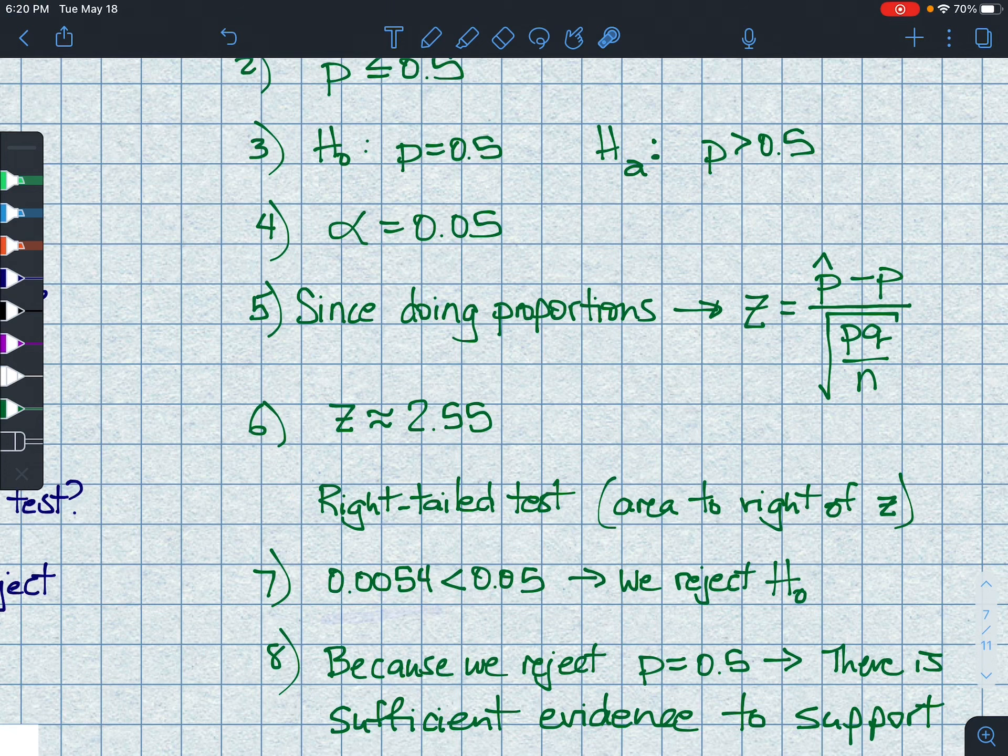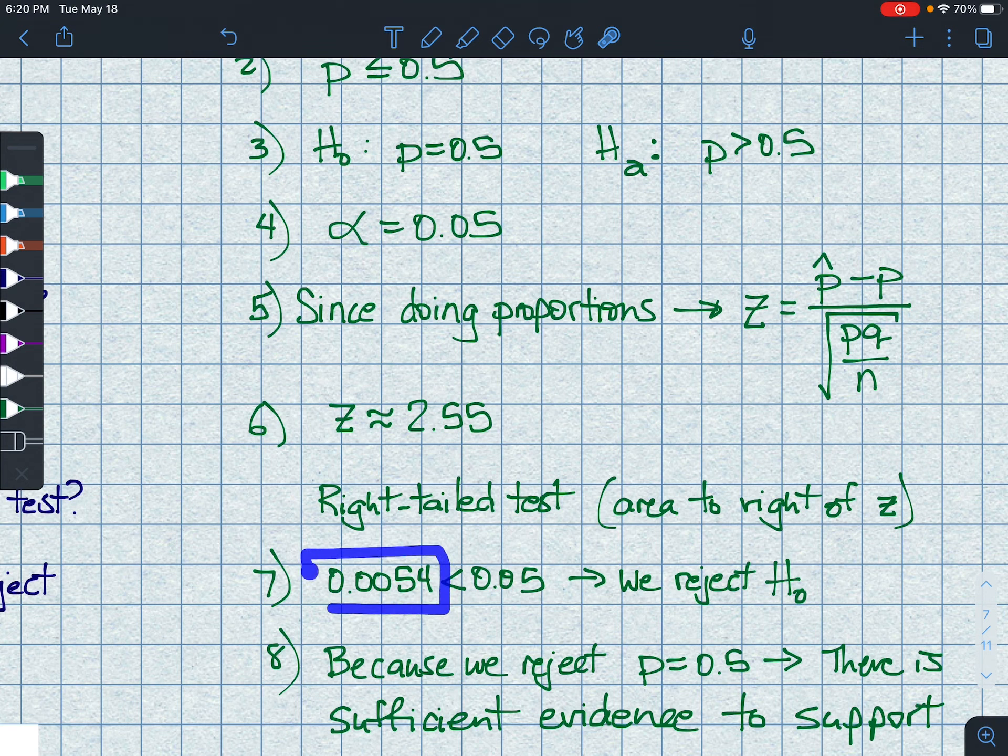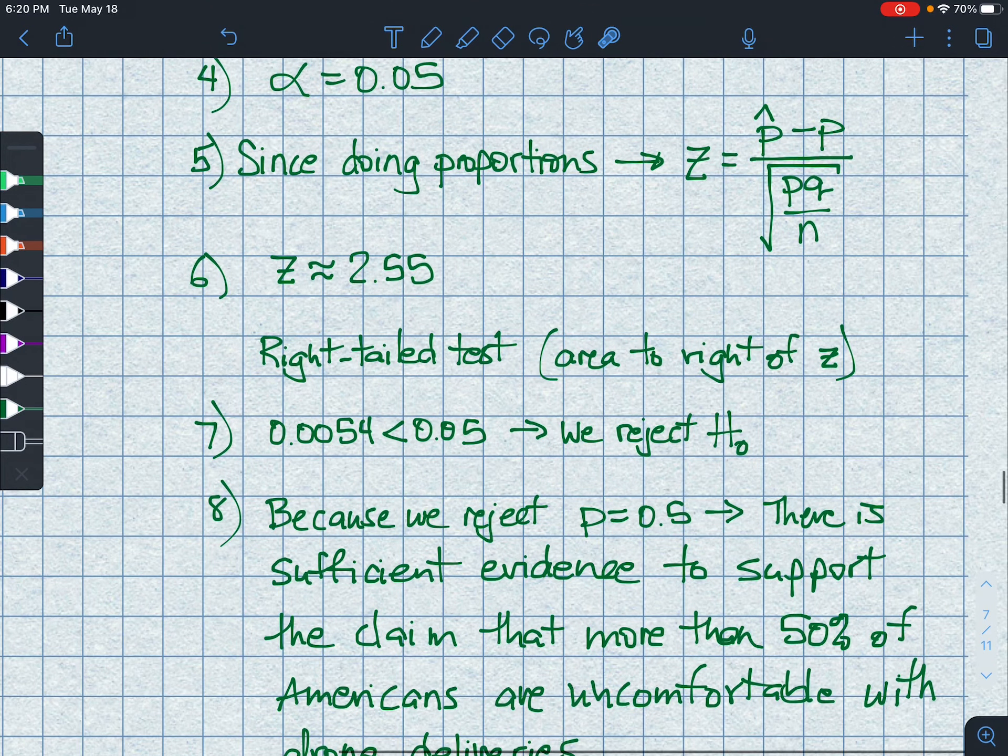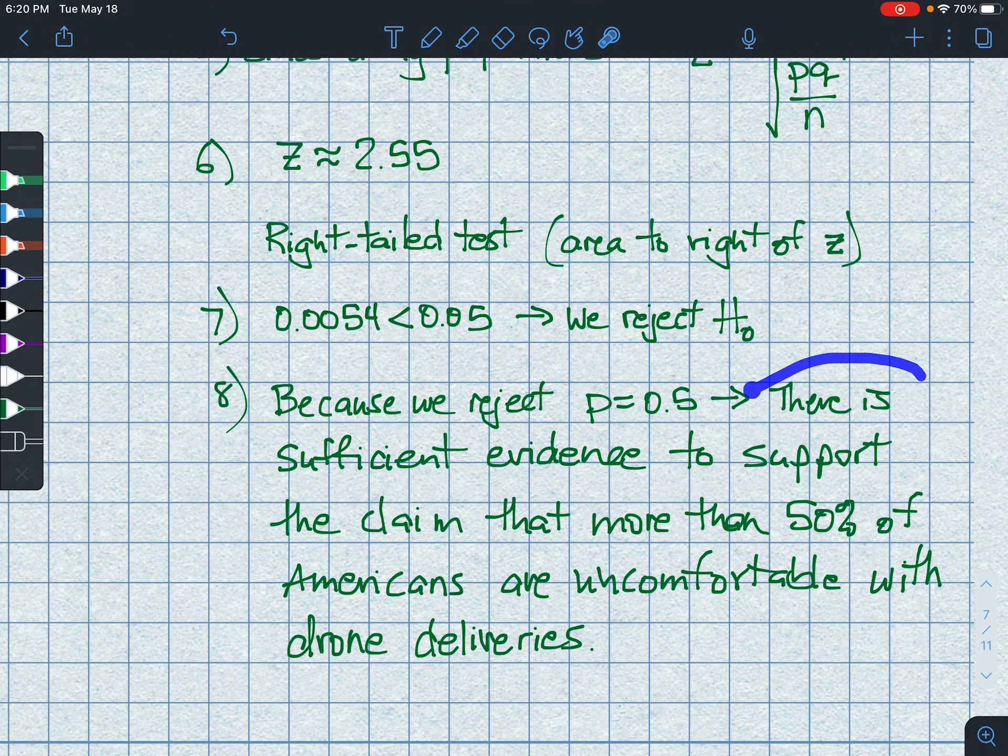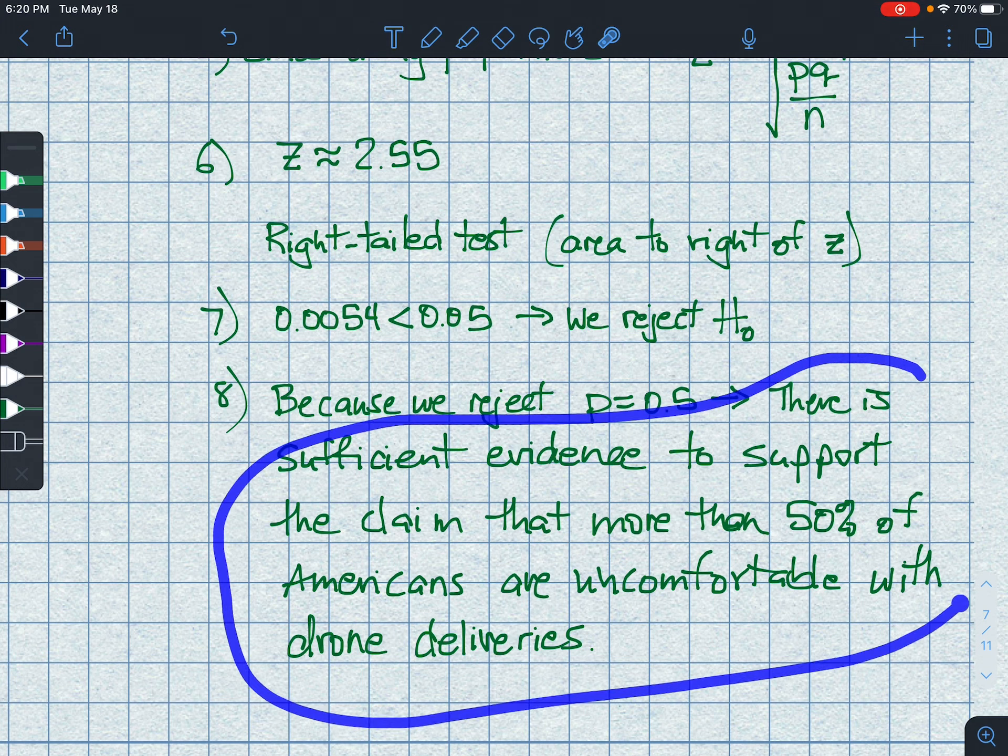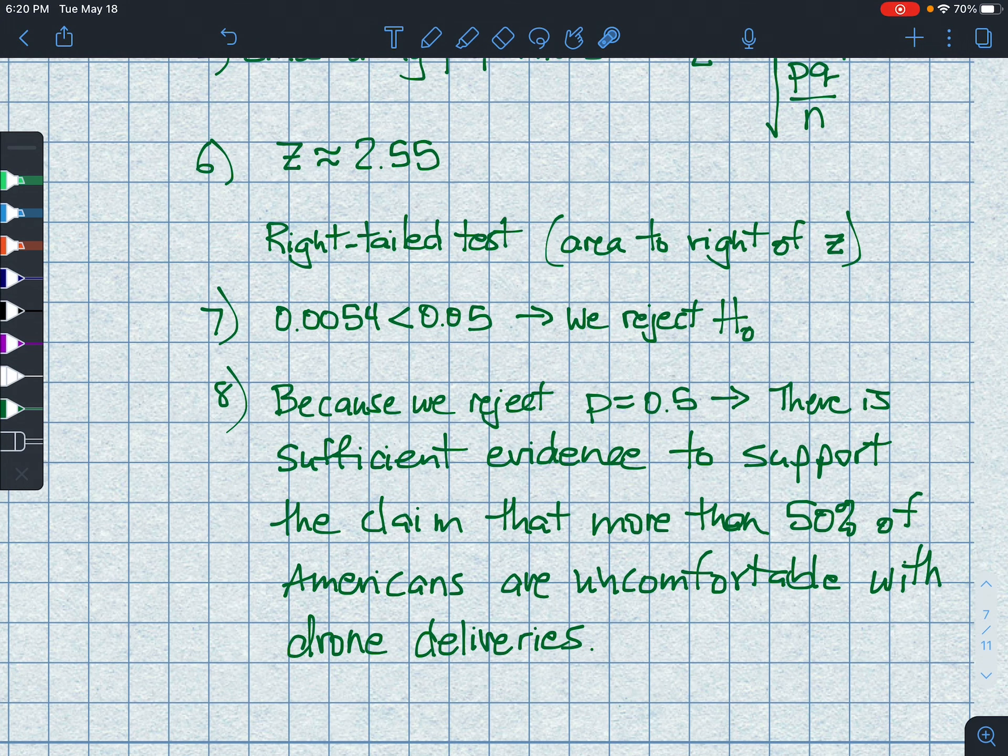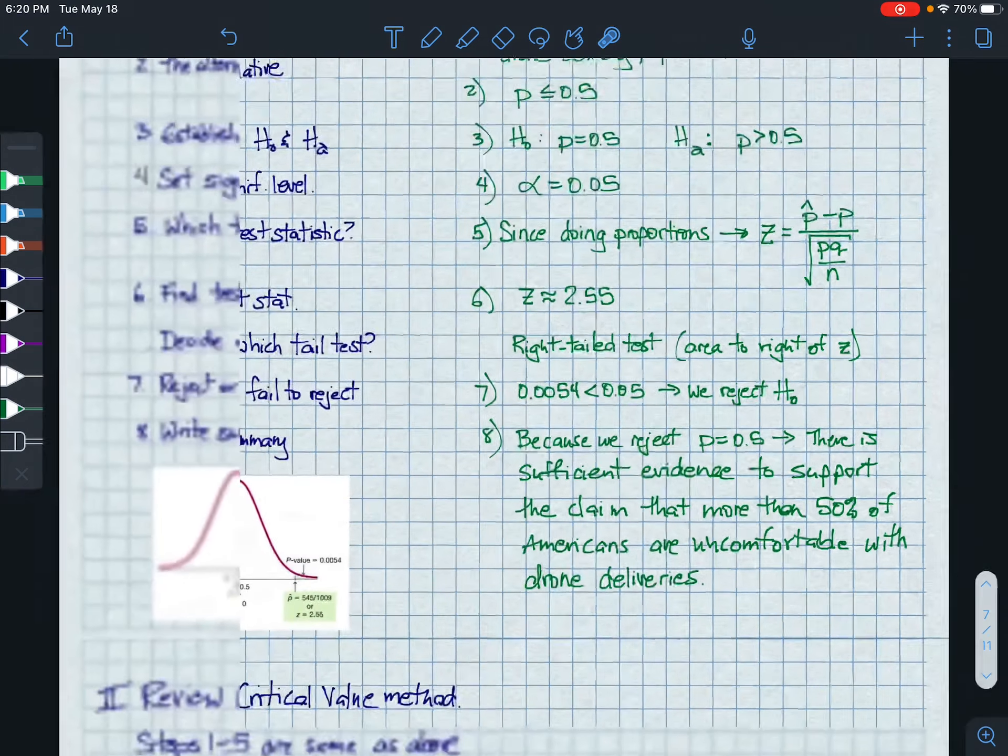Finally, we have to decide, do we reject or fail to reject the hypothesis? And because our 2.55 has such little area after it, right? This is the p value, the area after that particular Z score. Then we clearly have to reject our null hypothesis. And so line eight, our final statement is, there is sufficient evidence to support the claim that more than 50% of Americans are uncomfortable with drone deliveries.